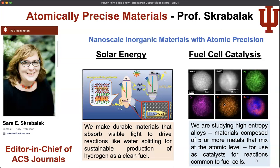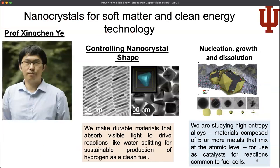She also works on fuel cell catalysis materials, things like high-entropy alloys and nanoparticles. Xing Chen Ye works on controlling the shape of crystal structures — similar or identical stoichiometries in very different shapes and packing — as well as controlling the nucleation and growth of materials to affect their properties. This leads to applications like catalysis, fuel cells, and clean fuel.